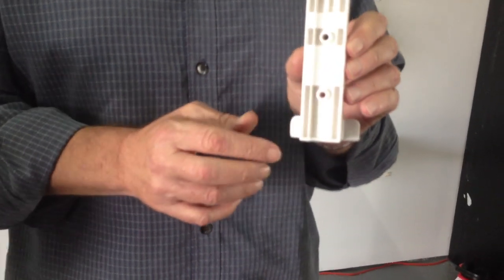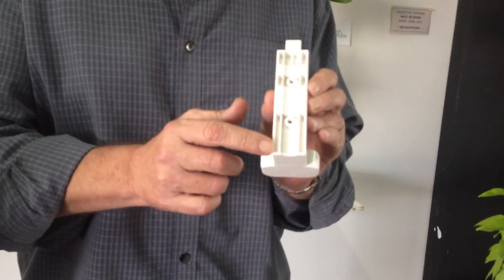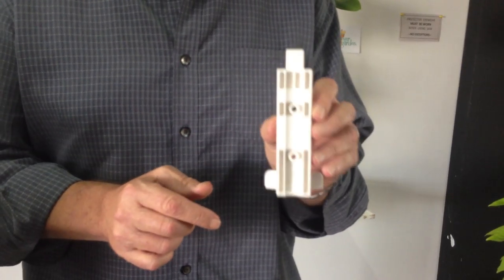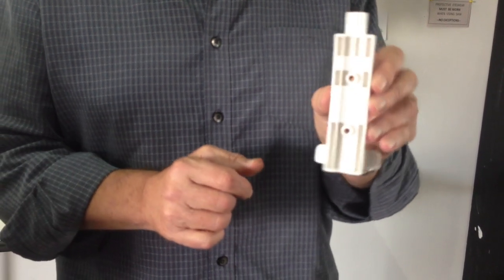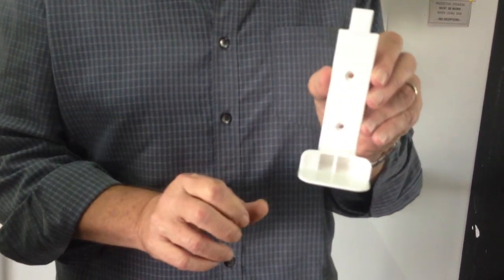On the back, you will also notice a groove. That groove is meant for when you put it onto a pole or a round object, the hanger will not slip from side to side.